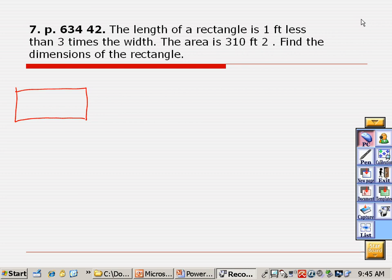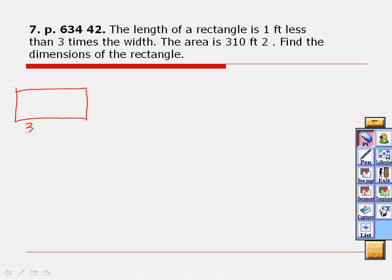All right, the first thing I did was draw a rectangle and I have 3, whoops, 3w minus 1 and w. Then I need to multiply those. W times 3w minus 1 is equal to 310. Now, again, do you see how the left-hand side I have to distribute? So that gives me 3w squared minus w. If it's okay, I'm going to go ahead and do minus 310 equals 0. Did everybody get to there? Yeah.